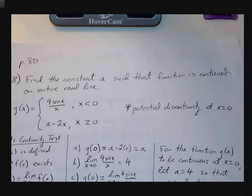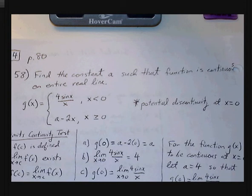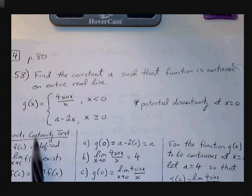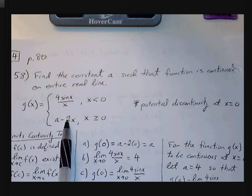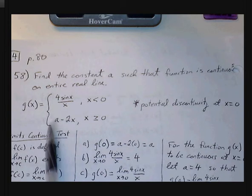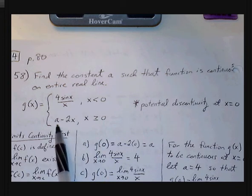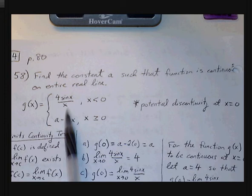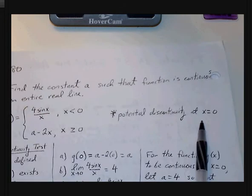Let's look at number 58. Find the constant a such that the function is continuous on the entire real line. We have two piecewise functions: 4 sine x over x, where x is less than 0, and a minus 2x, where x is greater than or equal to 0. We're trying to identify the appropriate value of a so that the piecewise functions will connect at the potential discontinuity at x equals 0.